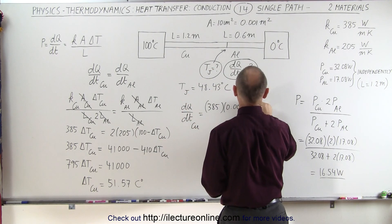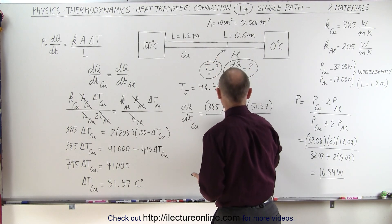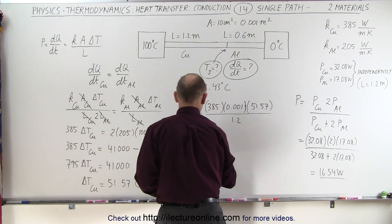and divide that by the length of the copper section, which in this case is 1.2. So this is equal to, and of course it should be exactly the same as what we got over there.